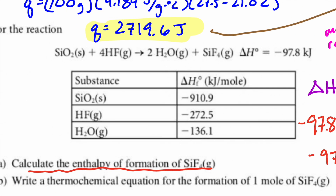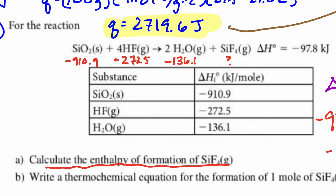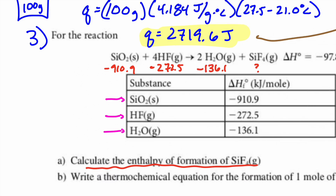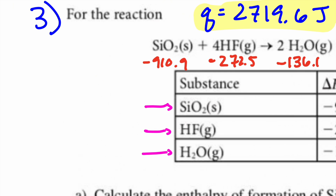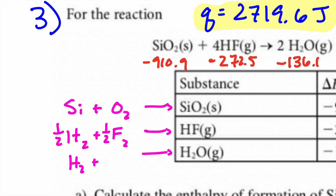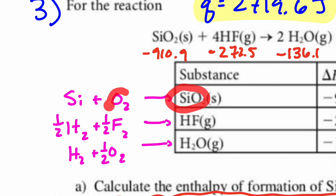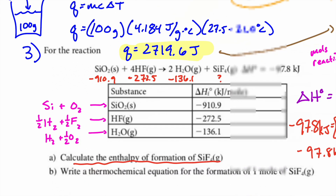When given a problem like this, immediately identify: ΔHf(SiO₂) = −910, ΔHf(HF) = −272.5, ΔHf(H₂O) = −136.1. These values result from making each compound from its elements: Si + O₂, H₂ + ½F₂, H₂ + ½O₂. You end up with four formation equations from this one problem — one mole from elements at standard conditions.